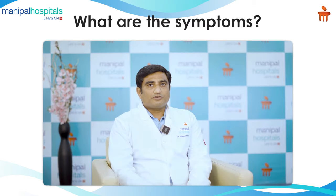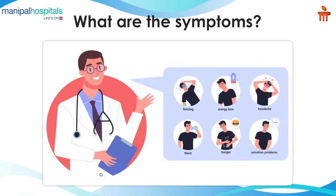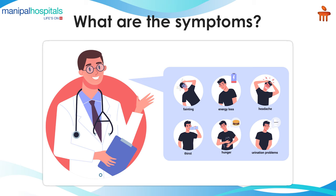What are the symptoms of sugar, or diabetes, or hyperglycemia? It can be excessive urination, excessive intake of water, excessive intake of food, weight loss, blurring of vision, paresthesia, tingling sensation, numbness in the extremities, or recurrent fungal infections.